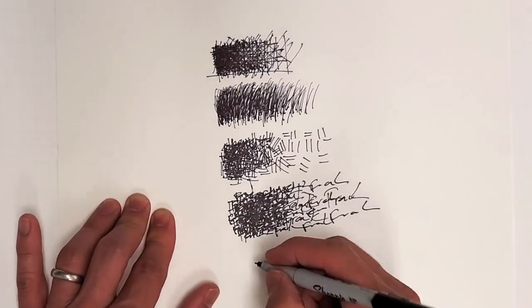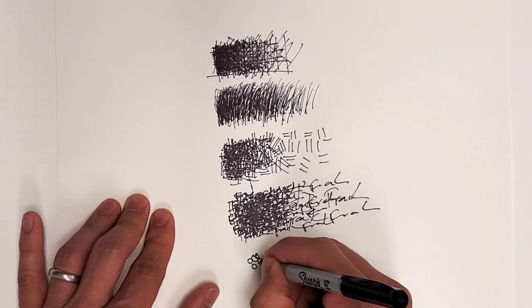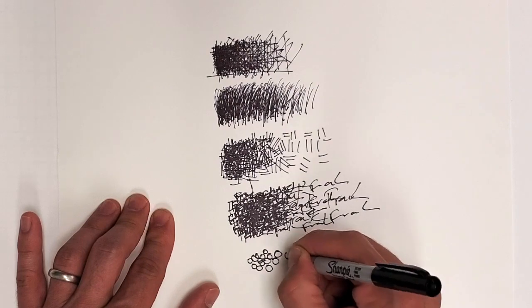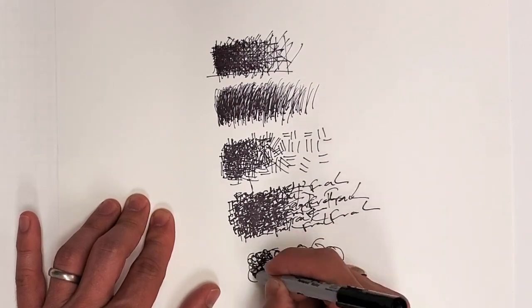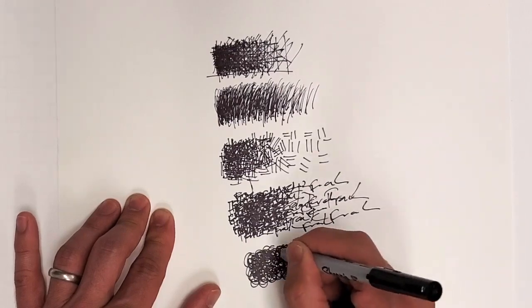The last one I'm going to show you is a set of shapes. So these circles, and I will vary the size a little bit. Sometimes a little bit tighter, a little bit smaller, sometimes a little bit bigger. But again, as you layer up more, the darker the value will become.